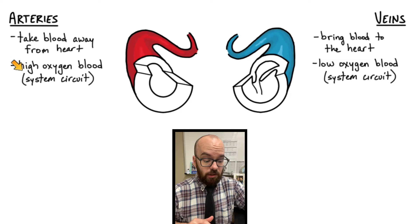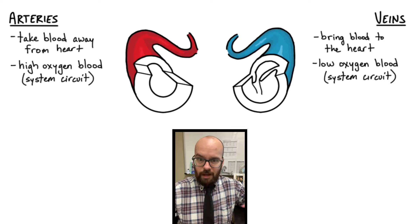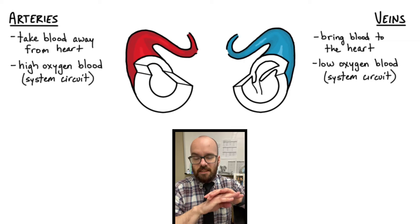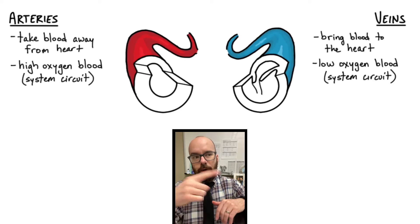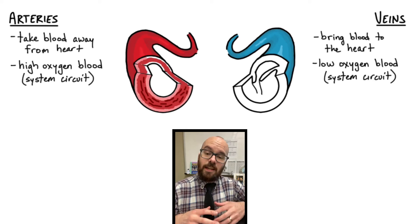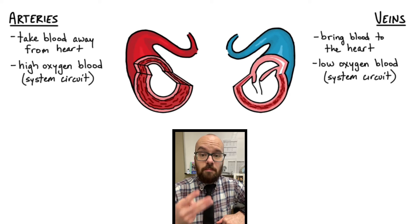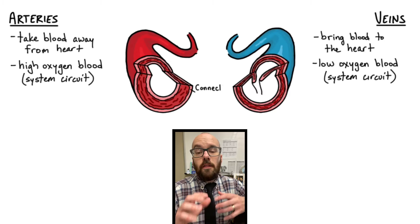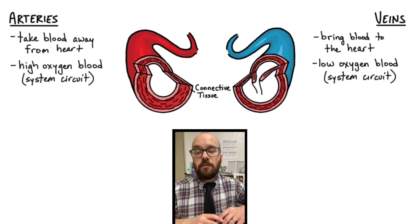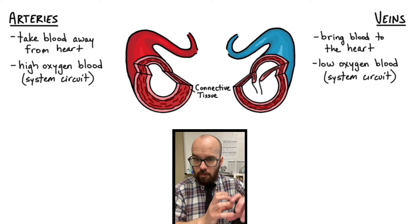That's what I mean by the systemic circuit — blood carried through the aorta to all the capillaries of the body and then back through the vena cavas. The systemic circuit is essentially everything except the pulmonary artery and pulmonary vein. Now let's take a look at the layers of the blood vessels themselves. There are three main layers: the outer layer is a layer of connective tissue, which gives the blood vessel its shape, strength, and support.